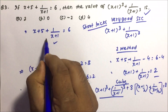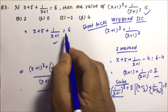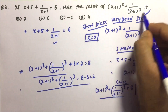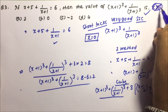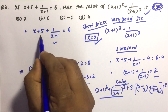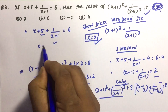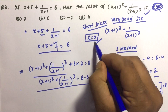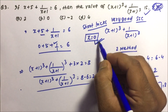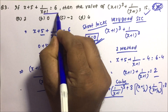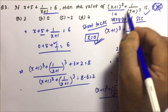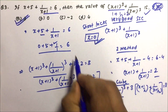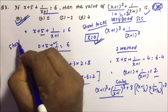Here is the short trick: find for what value of x the equation equals 6. They have not given the condition that x is not equal to 0, so put x equals 0. Then 0 plus 5 plus 1 divided by 1 equals 6 — correct. Now put x equals 0 in the expression to find: 1 cube plus 1 by 1 equals 2. By both methods we get the same answer, so always go for the short tricks in the examination.